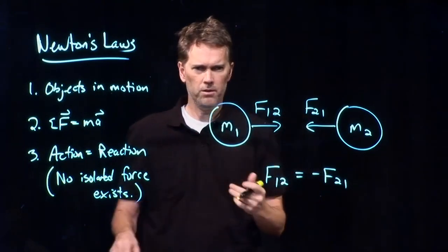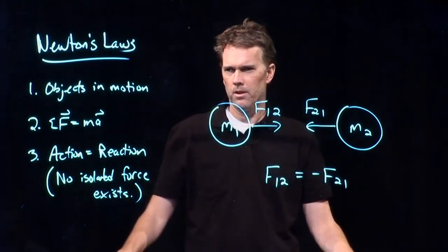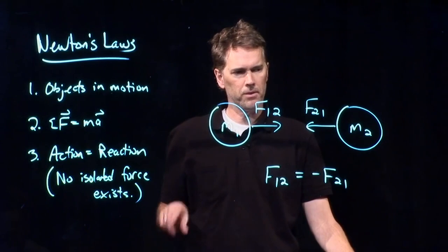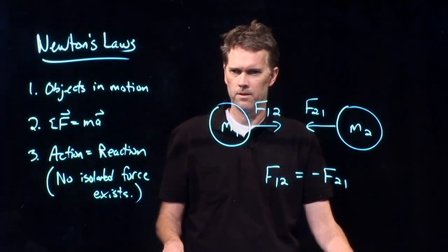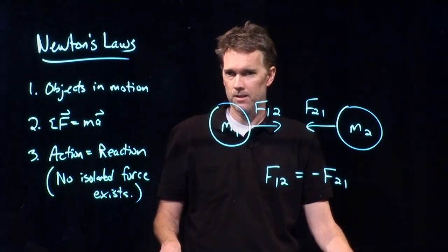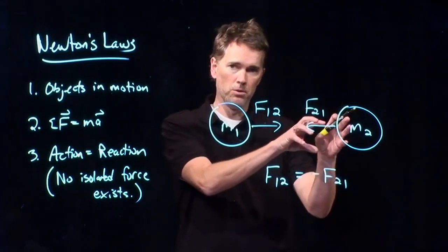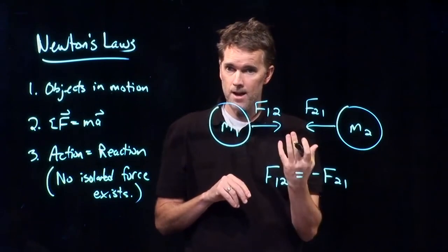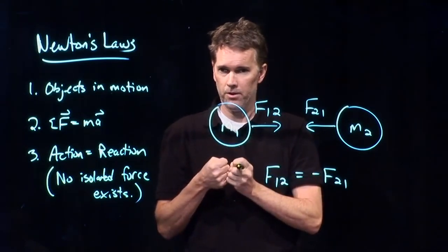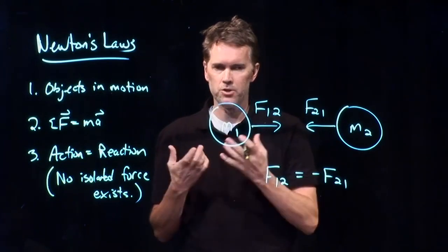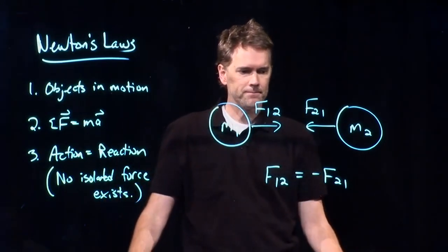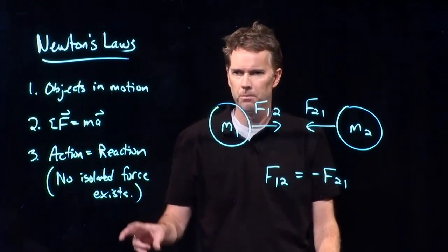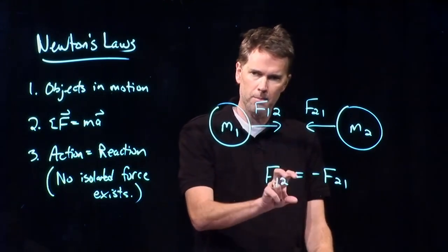Do we notice when the moon pulls on the earth? Is there something that happens that we notice? The tides — exactly right. The tides are due to the moon pulling on the earth. The earth pulls on the moon and keeps it in its orbit. But as the moon goes around, it pulls on different parts of the earth differently and moves the oceans around — it changes the tides. So there's no such thing as an isolated force. Everything comes in pairs, always equal and opposite pairs.